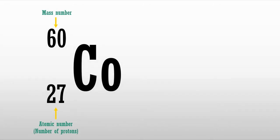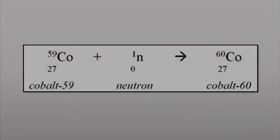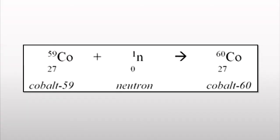Cobalt-60 has a mass number of 60 and an atomic number of 27, meaning it has 27 protons and 33 neutrons. Cobalt-60 is a product from the fission reaction of cobalt-59. It is created through the bombardment of a cobalt-59 nucleus, the parent nuclei, by using a nuclear bullet, which is a neutron. This forms a more unstable cobalt-60 nucleus, which is the daughter nuclei.